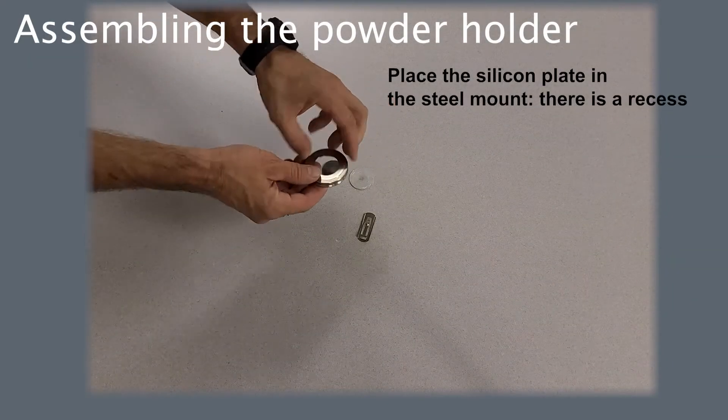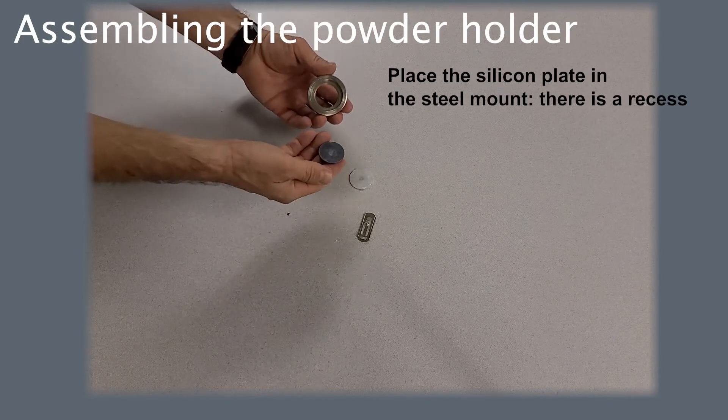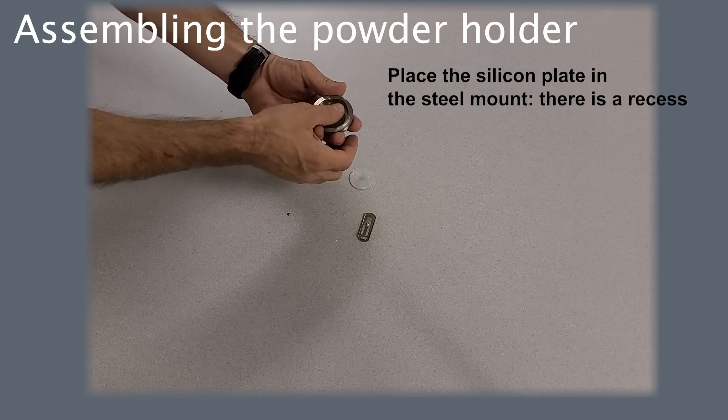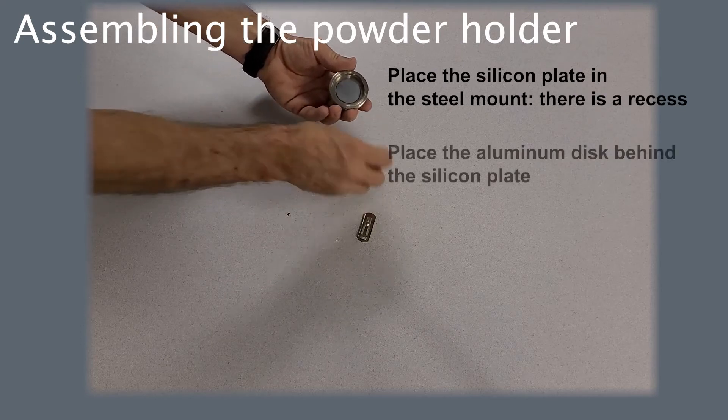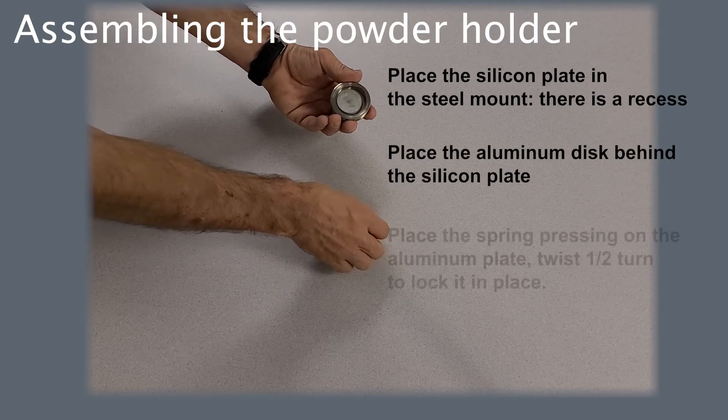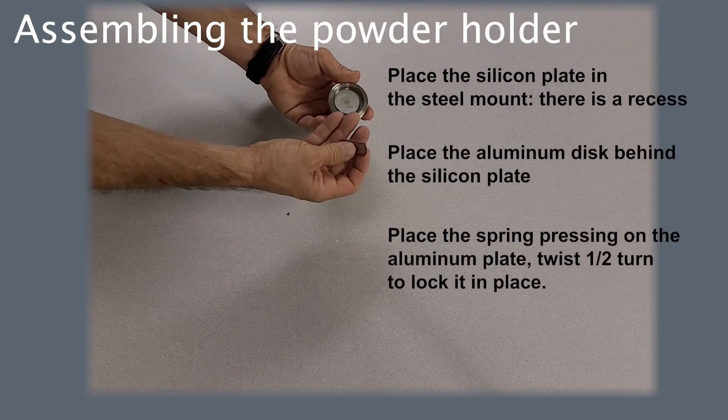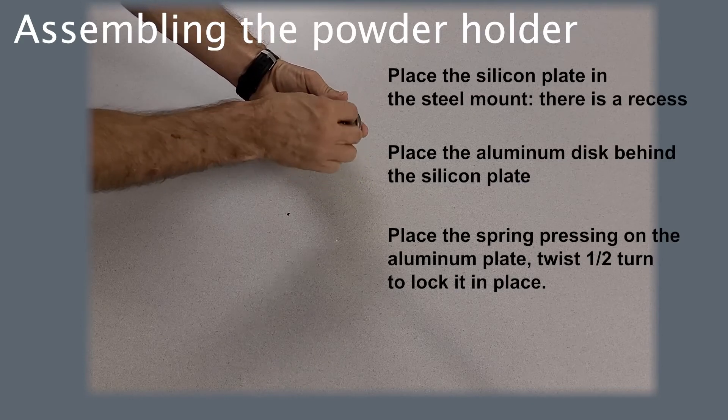To assemble the sample holder, place the silicon plate in the steel mount, fitting it in a recess, place the aluminum disc behind it, insert the spring pressing on the aluminum plate, and twist half a turn to lock it in place.